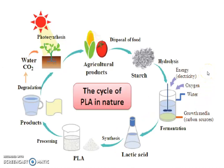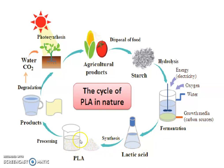This image shows the cycle of polylactic acid in nature. It starts from photosynthesis — you grow the crop, then extract the respective sources such as corn or other vegetables. You extract starch from that, then subject the starch to hydrolysis and fermentation to get lactic acid. You then polymerize it to get polylactic acid, process it into end products, and after usage these products undergo biodegradation. This is how the cycle repeats.